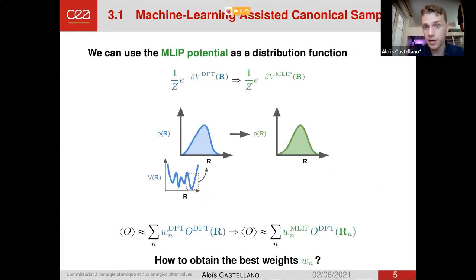So the method I'm presenting today is based on this very simple idea. What if we use the machine learning potential as a distribution function? So what we want to reproduce here is not anymore the potential surface, but the Boltzmann distribution of the DFT system at some certain condition. This change of point of view will allow us to focus on a very narrow part of the potential surface. We can forget the part of the potential surface that doesn't interest us, and focus on representing the distribution function. And in the end, to compute an average, we will do a weighted sum with weights and configurations coming from the machine learning potential, but the properties are coming from DFT. And the question that it raises is, how to obtain the best weights?